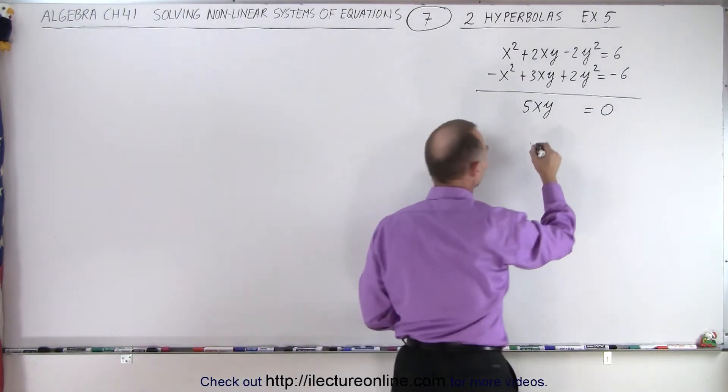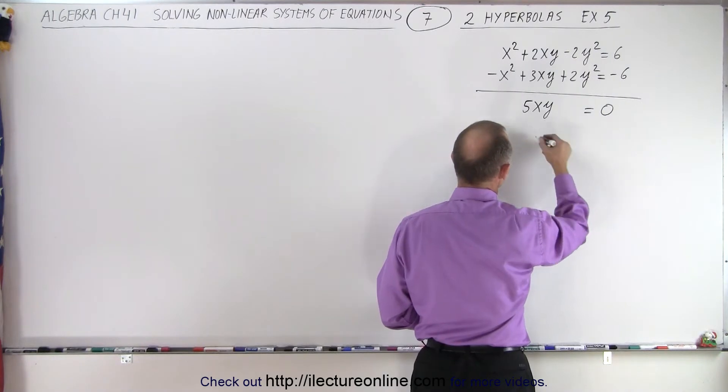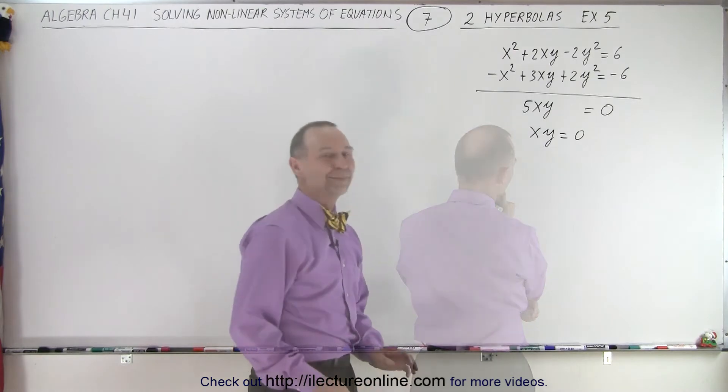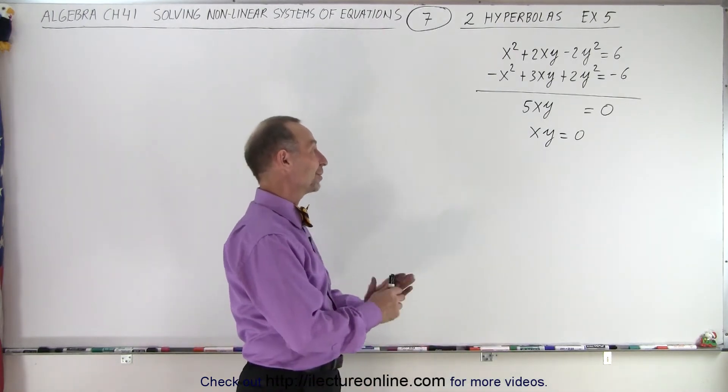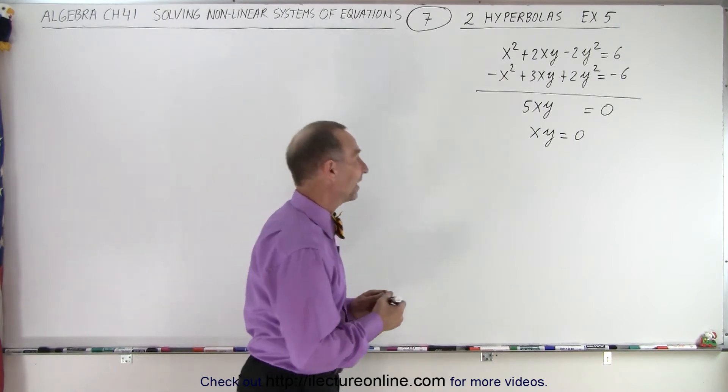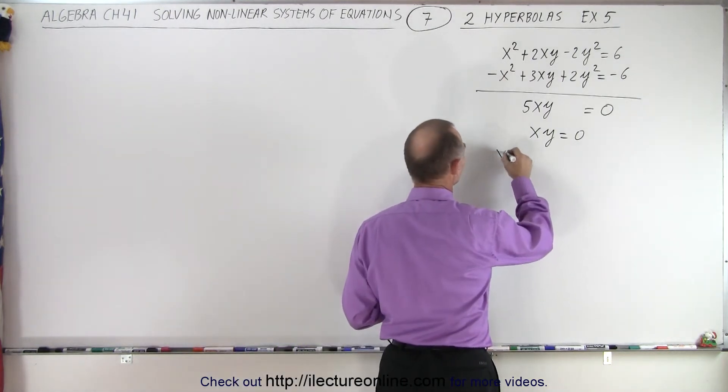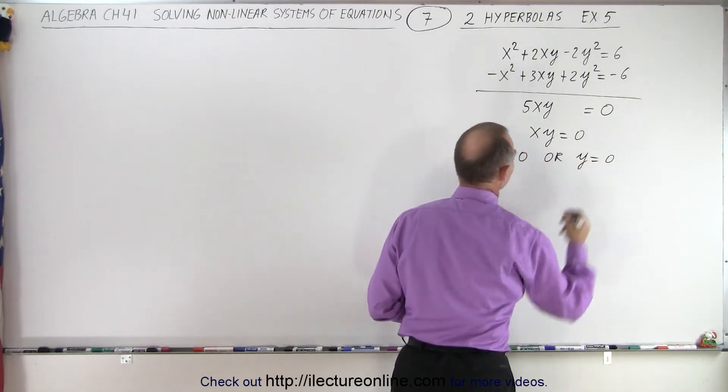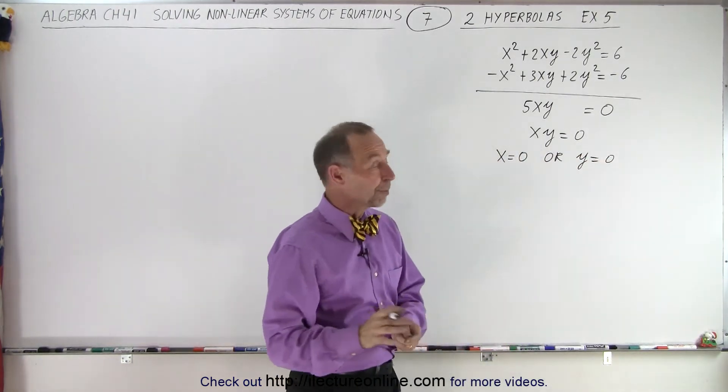So that means that when we divide both sides by 5, we get xy is equal to 0. So we have two variables, x times y equals 0, which means that either x equals 0 or y equals 0. So that's the two possibilities.